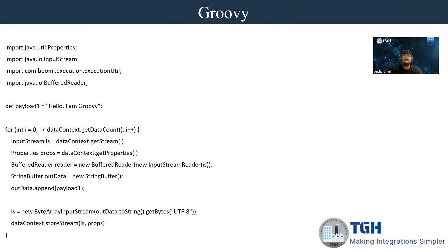Let's break down this Groovy code. The first four lines are imports of different libraries. The first is used to call or import properties. The second is InputStream, which provides the input. The third is ExecutionUtil, used to store execution-level properties. And the fourth is BufferedReader, which helps us write back to the input stream.